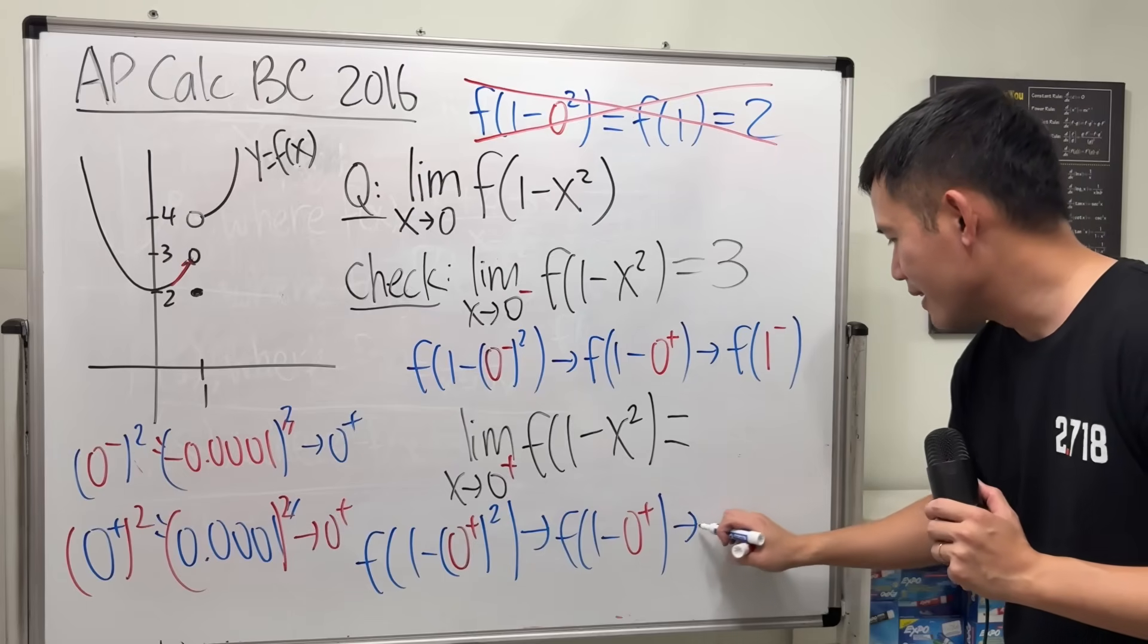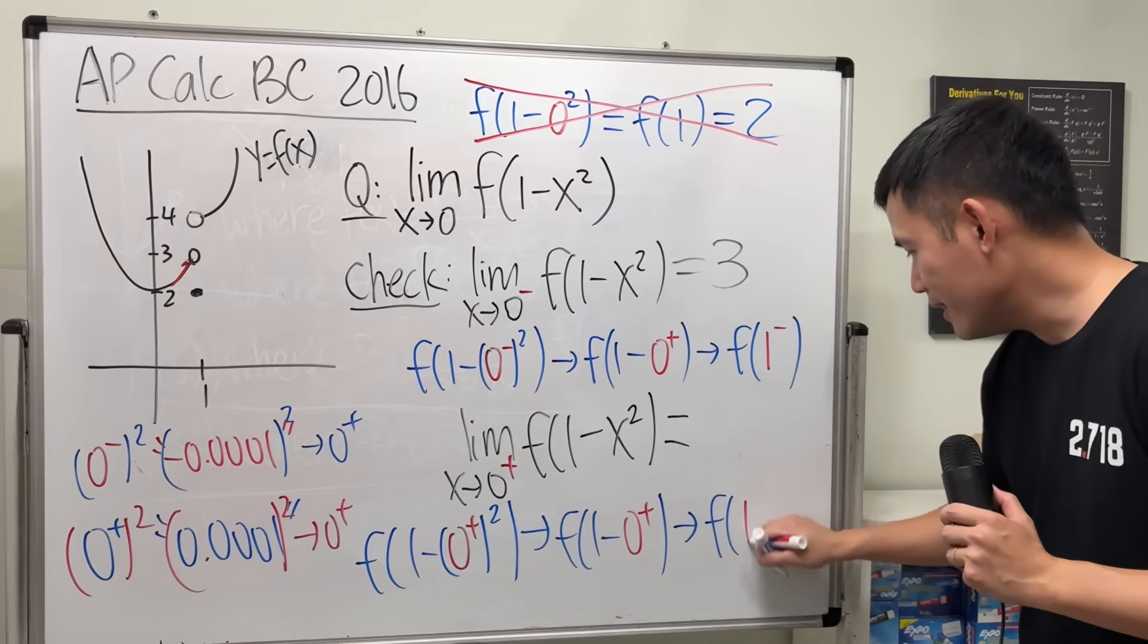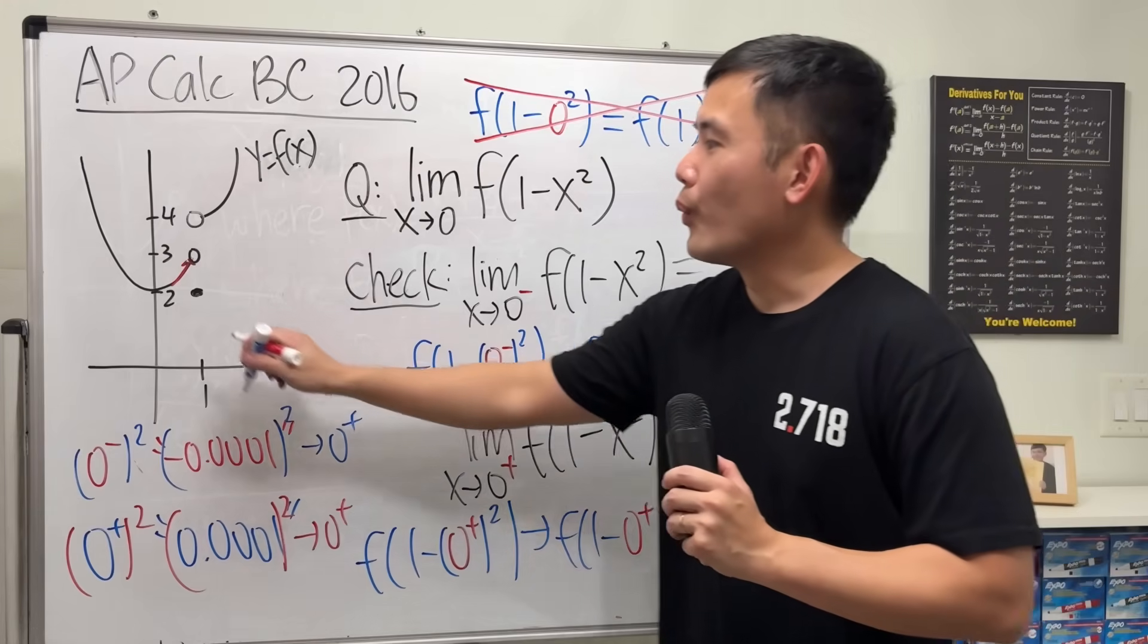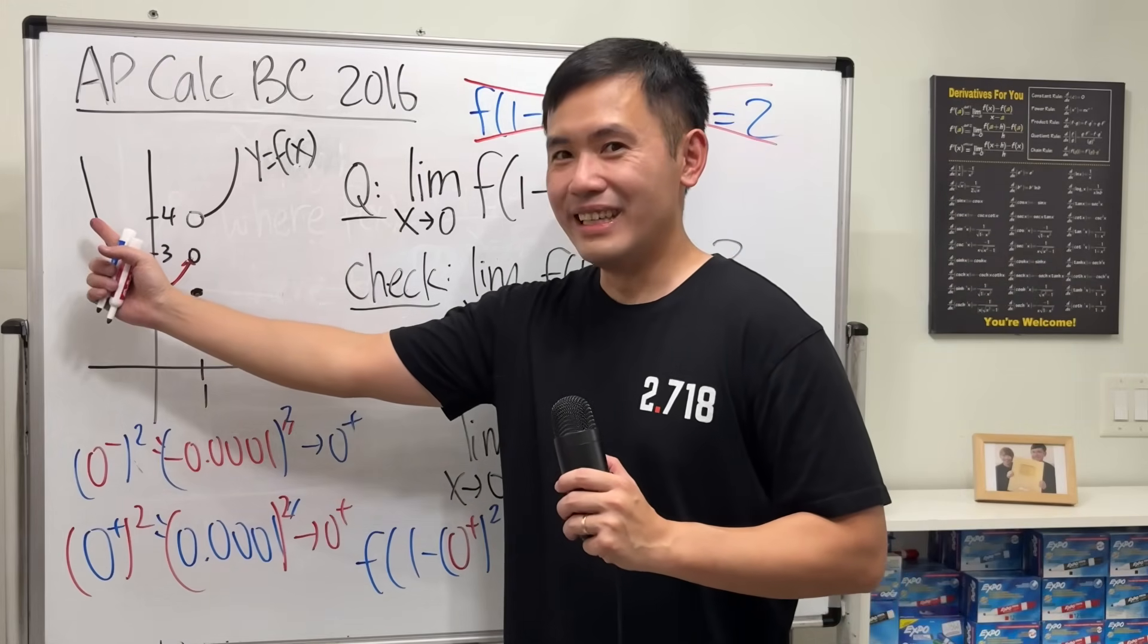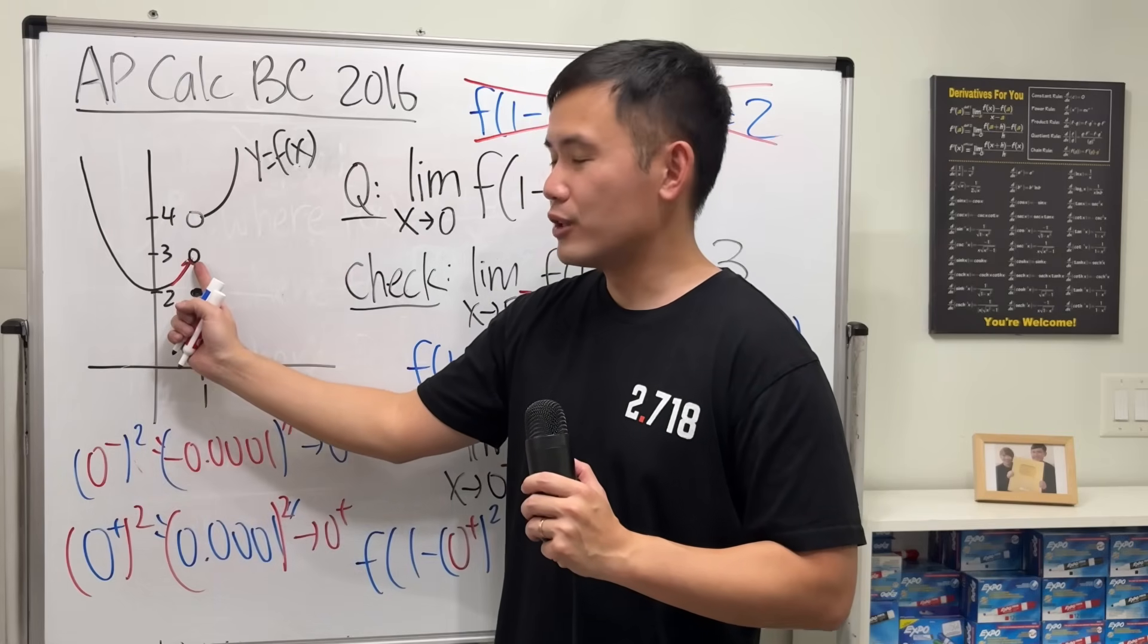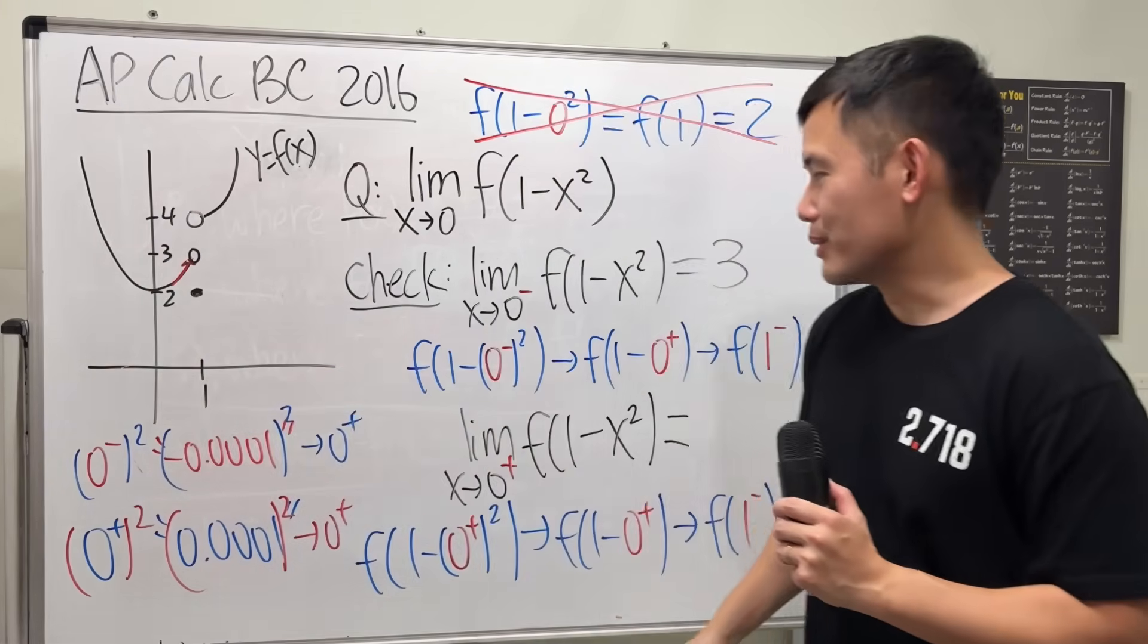Same story right here. This is approaching 1⁻. It's a little bit less than 1. We are still looking at the limit as x is approaching 1 from the left-hand side. So, it's still going to be like this. It's still equal to 3.